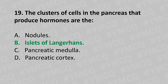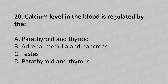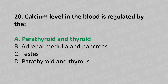Moving to our twentieth question. Calcium levels in the blood are regulated by the: Option A: parathyroid and thyroid. Option B: adrenal medulla and pancreas. Option C: testes. Option D: parathyroid and thymus. And the answer is Option A: parathyroid and thyroid.